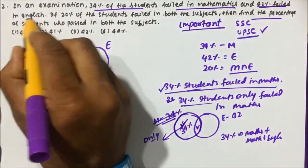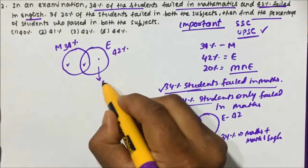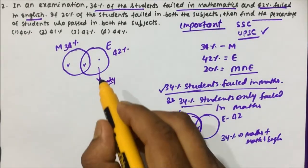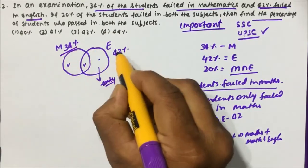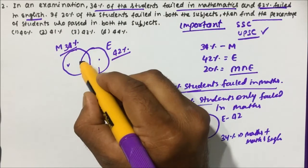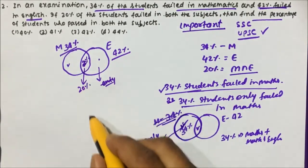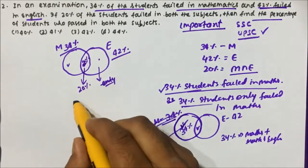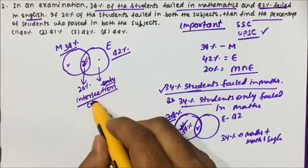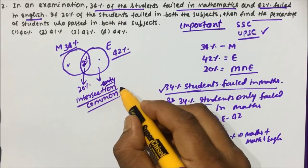Similarly, 42 percent failed in English means the entire English circle — not just the English-only region — is 42 percent total. And 20 percent of students failed in both subjects, which means 20 percent is the intersection, the common region between maths and English.